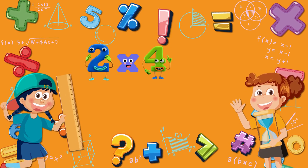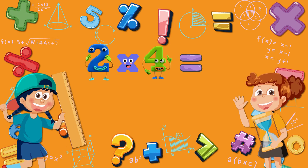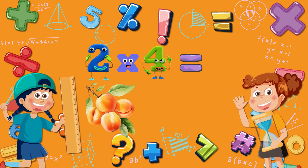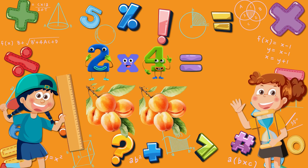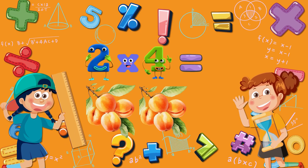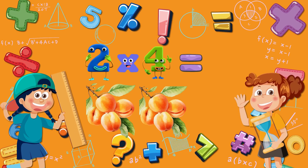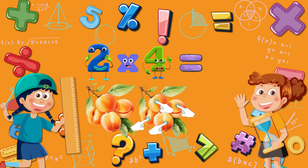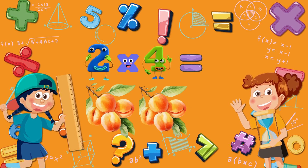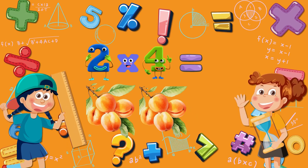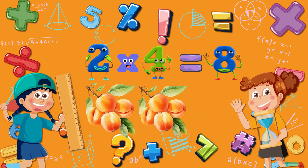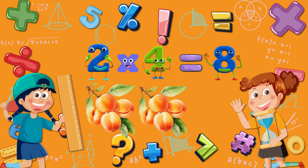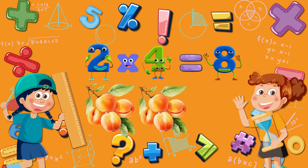Two times four is equal to? Two branches, each with four apricots. Four apricots on the first branch, and four apricots on the second branch. Four plus four is equal to eight. Great. Two times four is equal to eight.